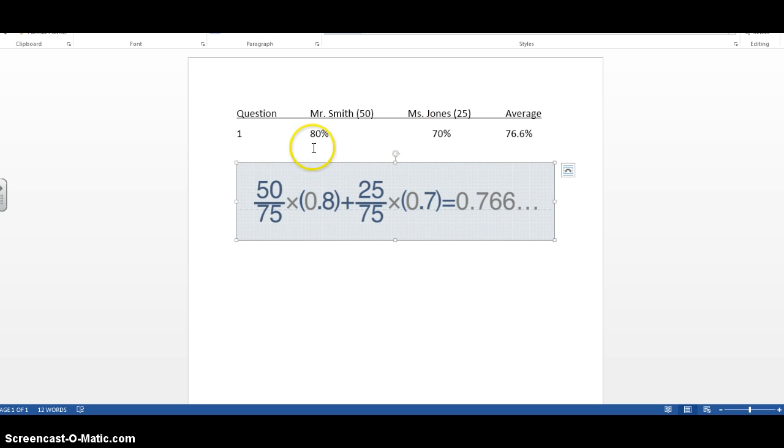For calculation, Mr. Smith has 50 students. That's his portion of the total 75. Take that, multiply it times 0.8, which is 80%, the percent correct in Mr. Smith's class. That becomes one factor.